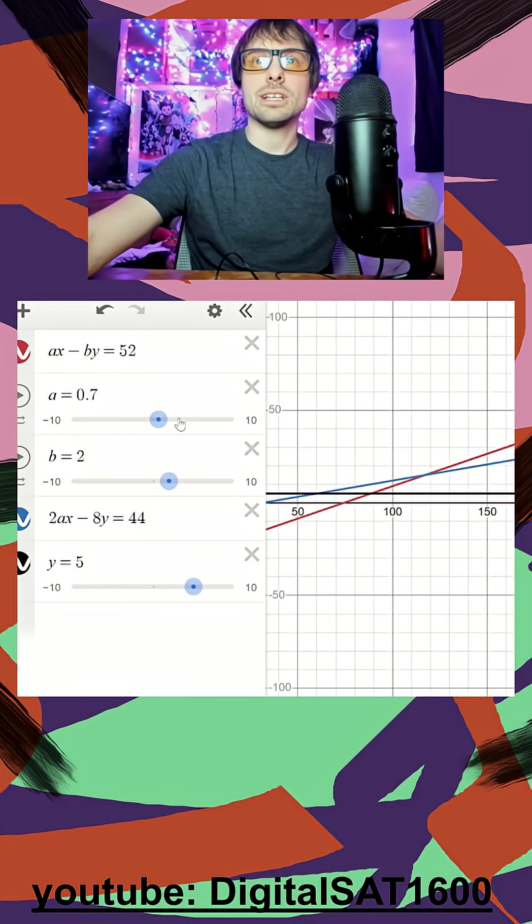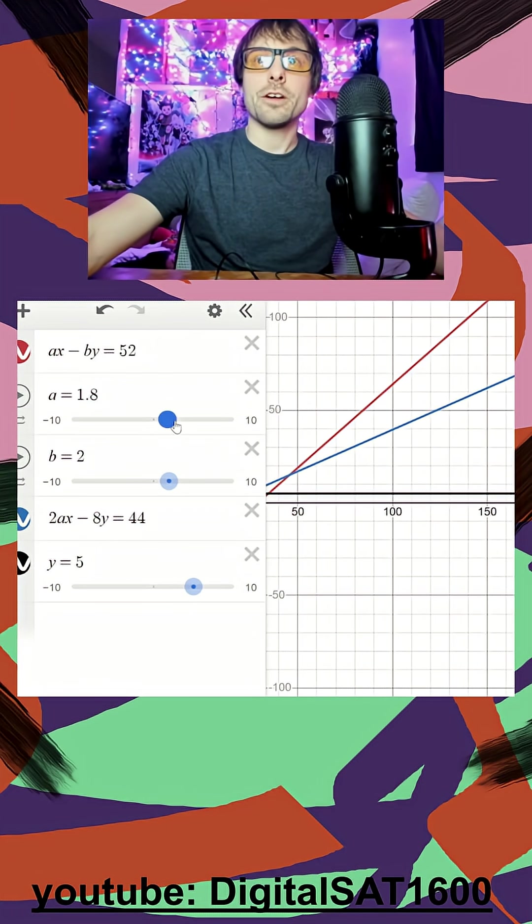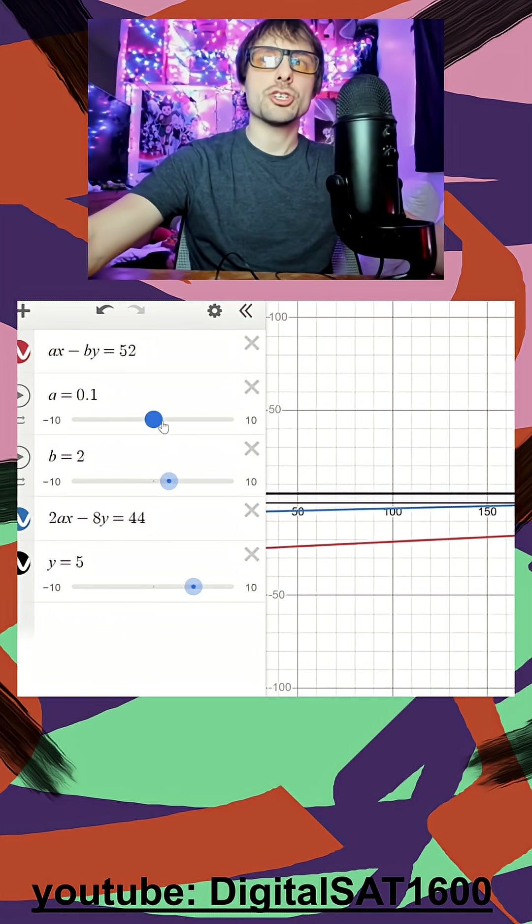So when b is 2, does it look like these two are going to intersect? They're intersecting beyond y equals 5. But look what happens when it tries to reach y equals 5. They start to break apart, right?